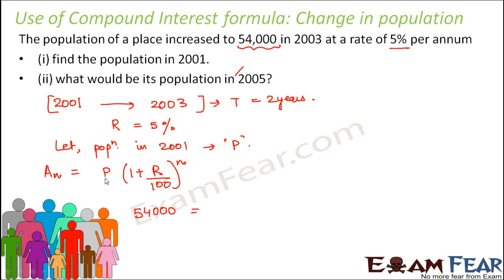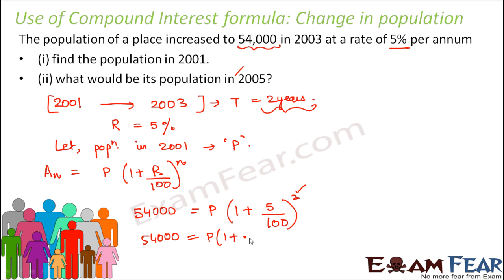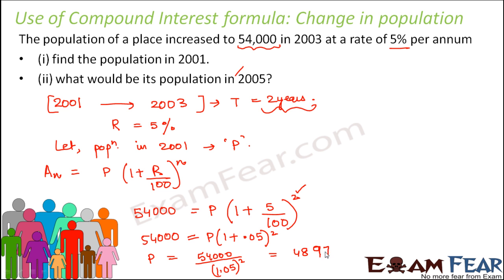This is equal to the principal, which is the initial population P, that we do not know. So: 54,000 = P into 1 plus 5 by 100 to the power 2. The time period is 2 years and it is increasing annually, so these two are in sync — you have 2 conversion periods. So P is equal to 54,000 divided by 1.05 squared, which equals 48,979.5.